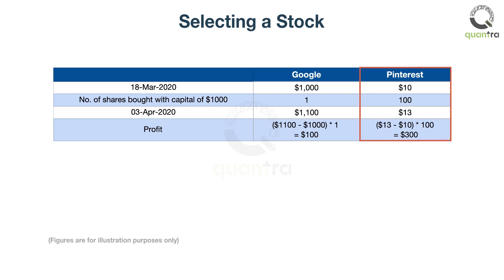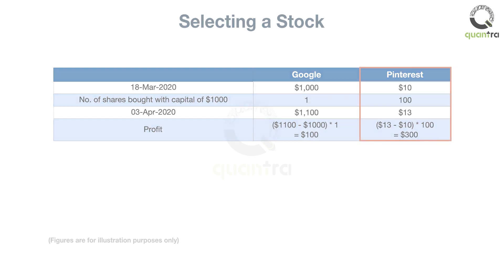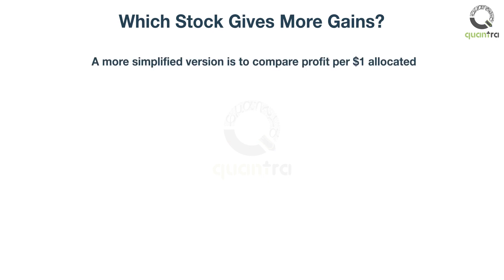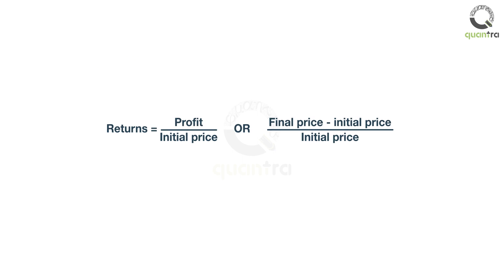Pinterest is the better choice. That is the intuitive way to look at things. A more simplified version is to compare profit per $1 allocated. This can be obtained simply by dividing profits by the purchase price. This ratio is called the returns.